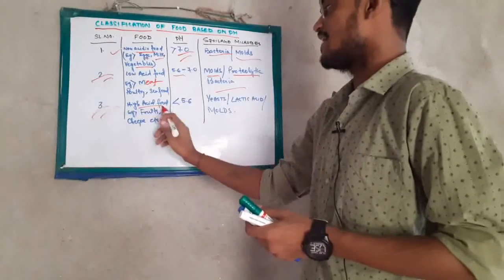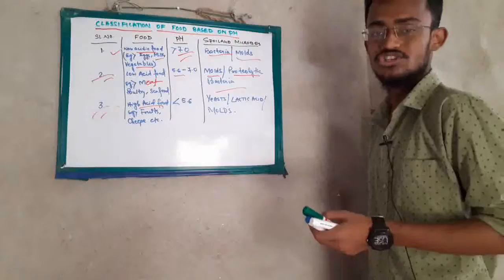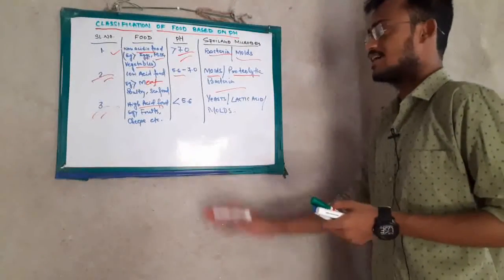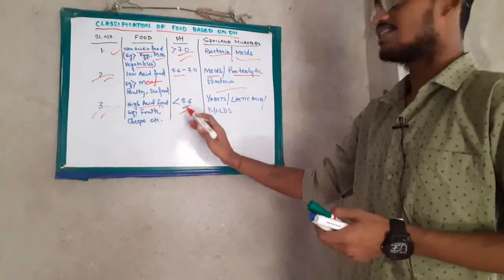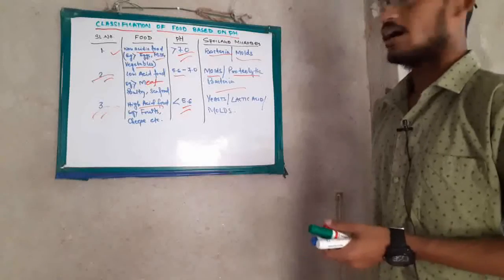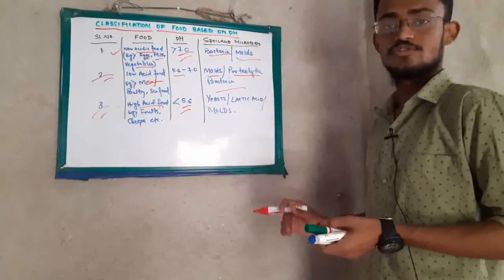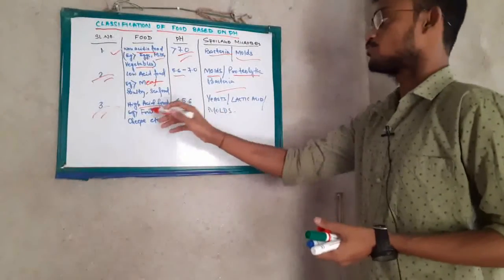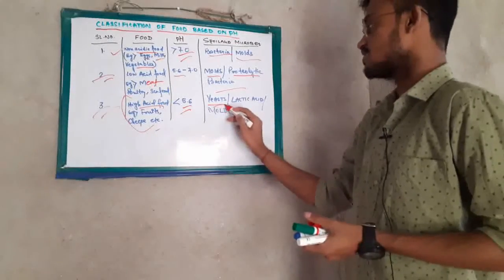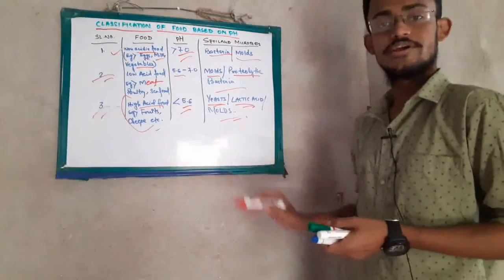Third, we have high acid food, for example fruits, cheese, and curds. The pH is greater than 5.6, and the microbes that spoil this kind of food are yeast, lactic acid bacteria, and molds.